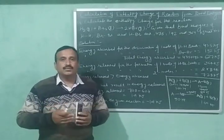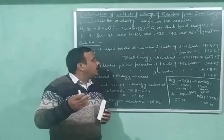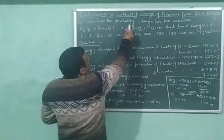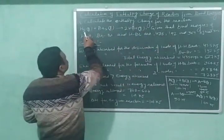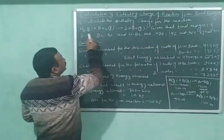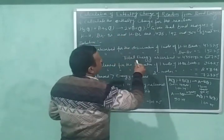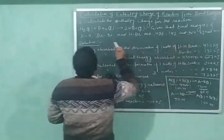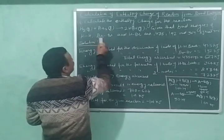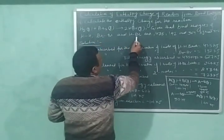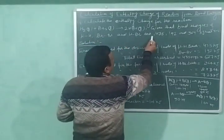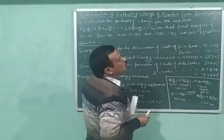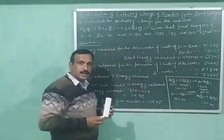Let us explain it with the help of a numerical problem. The problem is: calculate the enthalpy change for the reaction H₂ plus Br₂ giving us 2HBr. We are also given the bond energies of H-H bond, Br-Br bond, and H-Br bond are 435, 192, and 364 kilojoule per mole respectively.